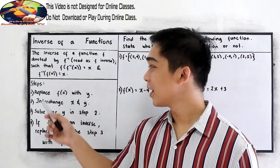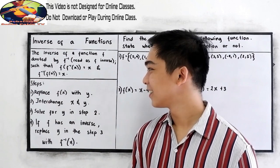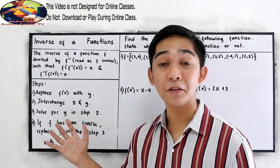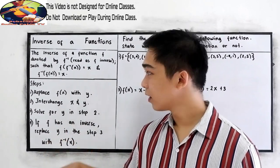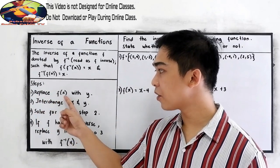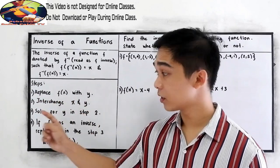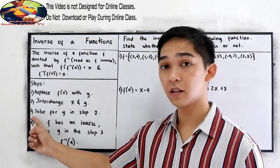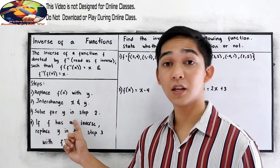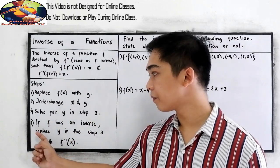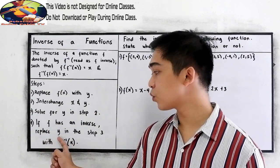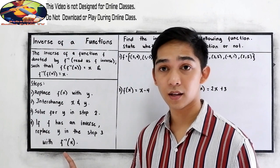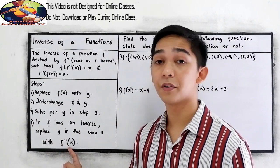Here are the steps in finding the inverse of a function. Number 1: replace f of x with y. Number 2: interchange x and y. Number 3: solve for y in step 2. And number 4: if f has an inverse, replace y in step 3 with f inverse of x.